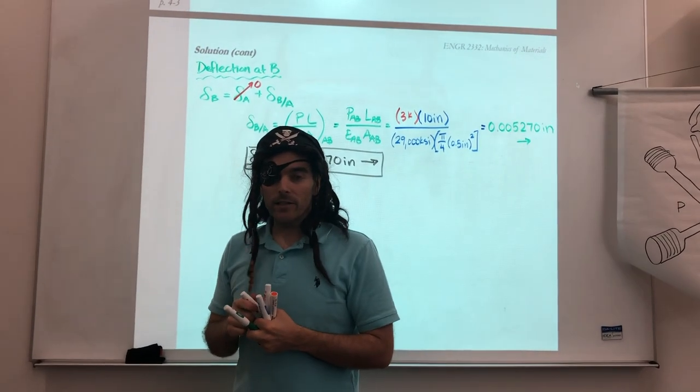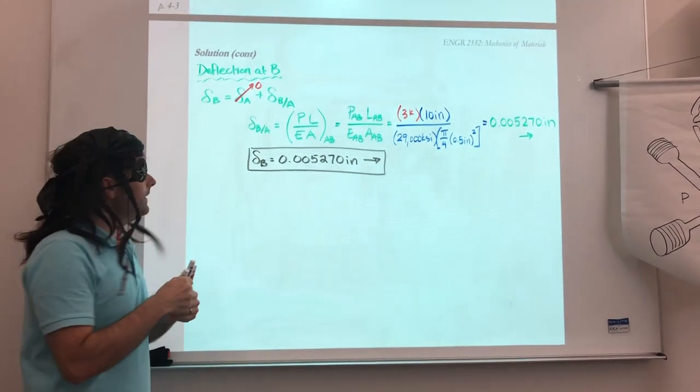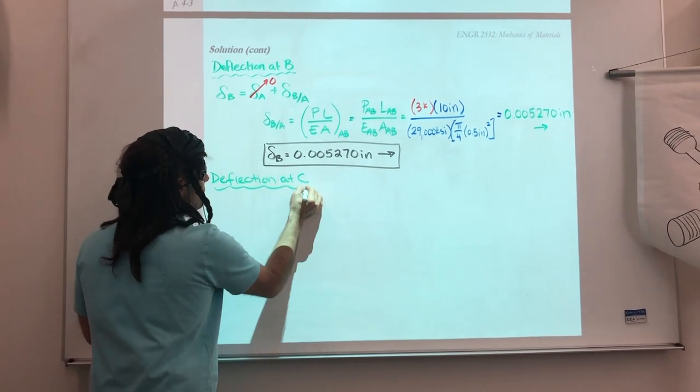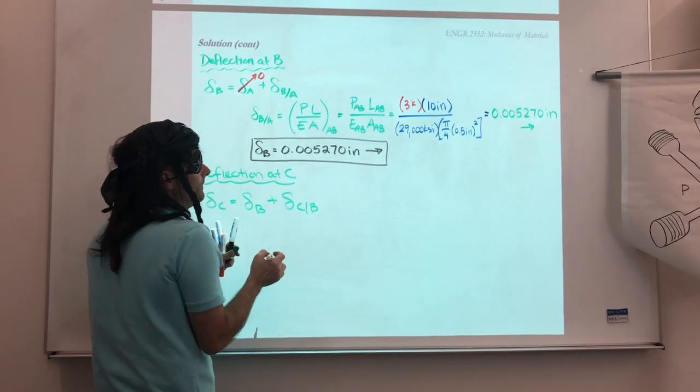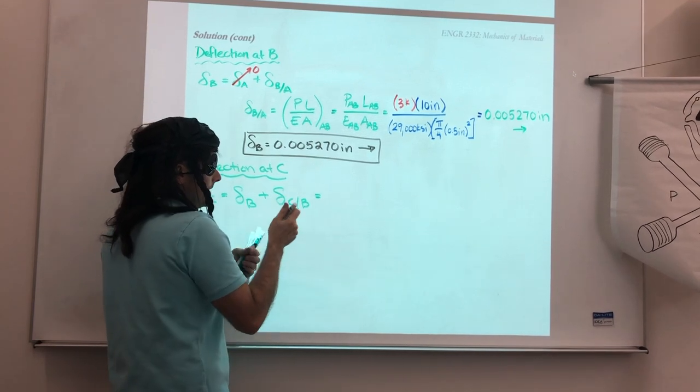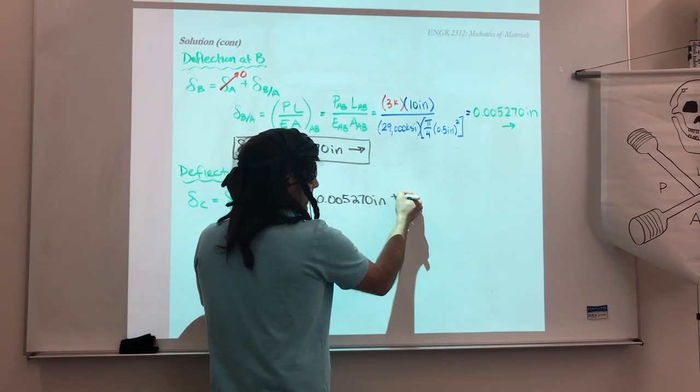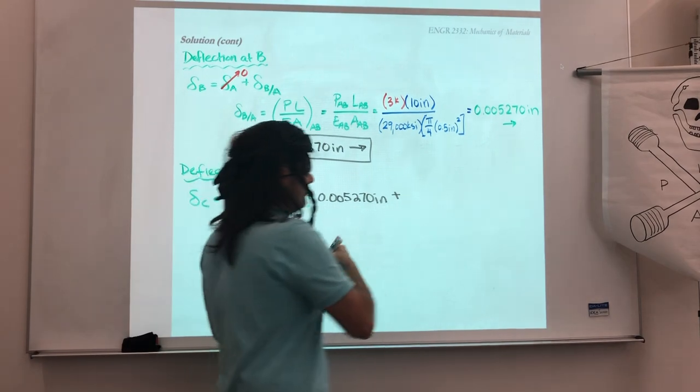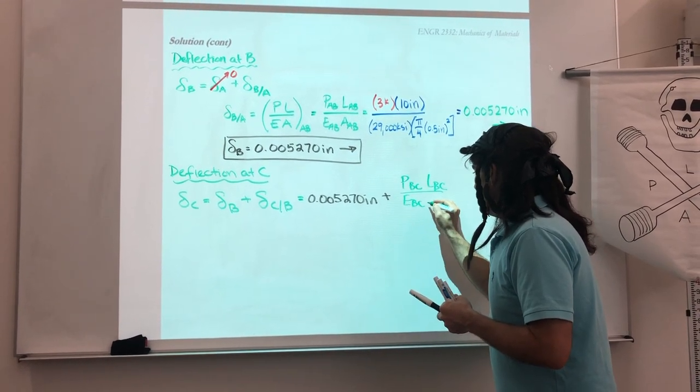So point C follows the same steps as point B. Delta at point C is equal to the deflection at point B plus the change of C relative to B. So this is going to equal my total amount from the delta B, which we said was 0.005270 inches, plus delta C relative to B, which we said is Hooke's Law for segment BC. So we'll have plus PBC, LBC, over EBC, ABC.